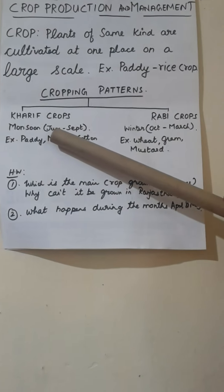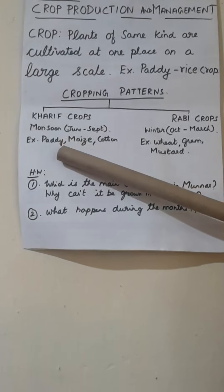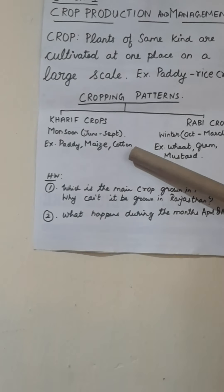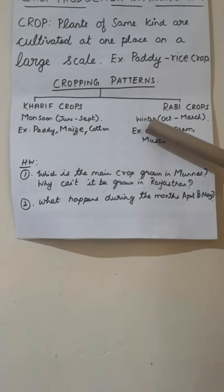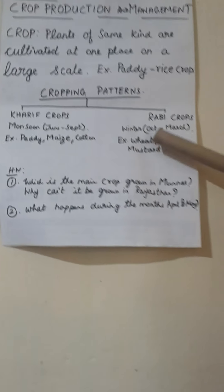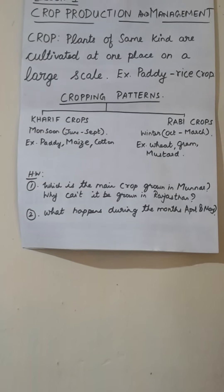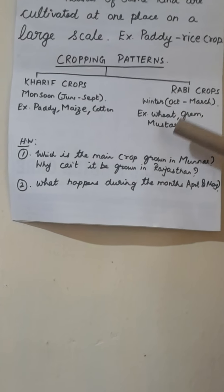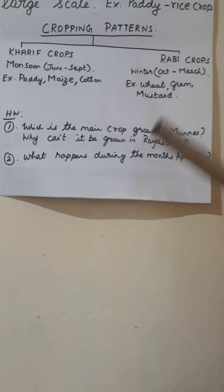Kharif crops are grown in the monsoon season, June to September. Examples: paddy, maize, and cotton. Rabi crops are grown in the winter season, October to March. Examples: wheat, gram, and mustard.